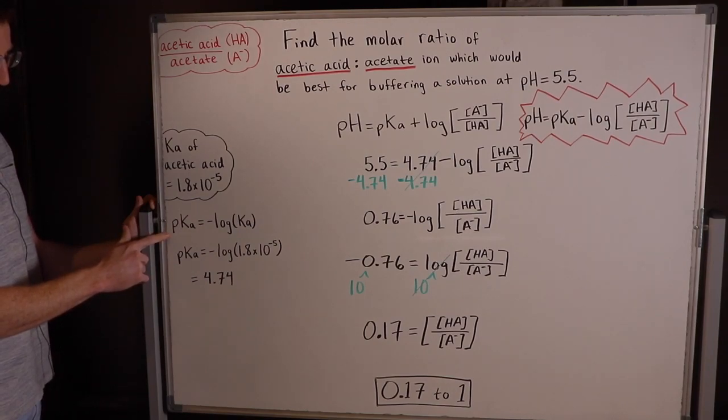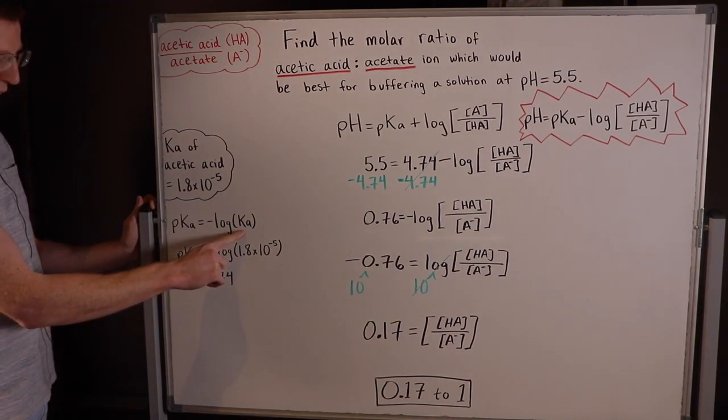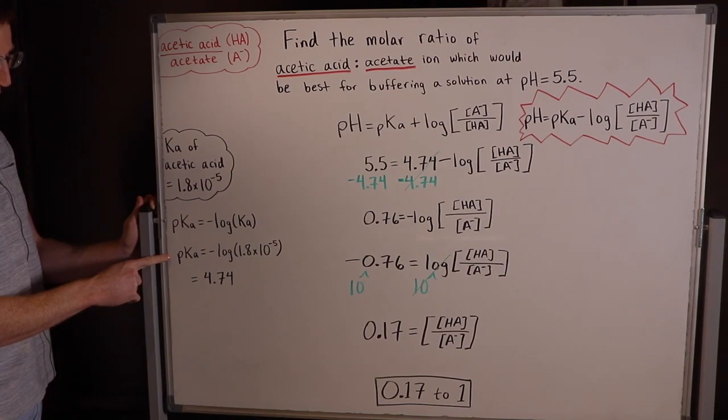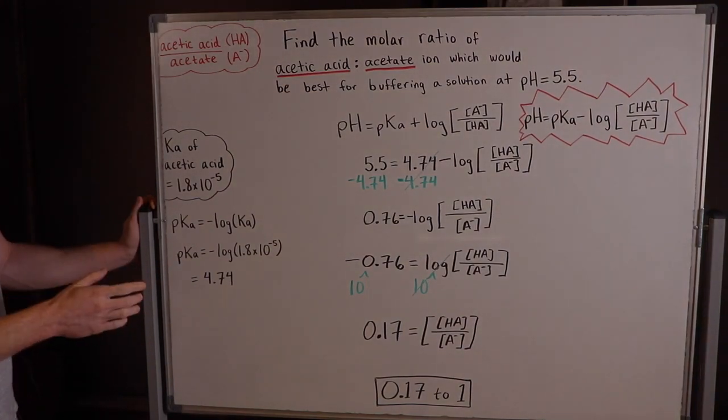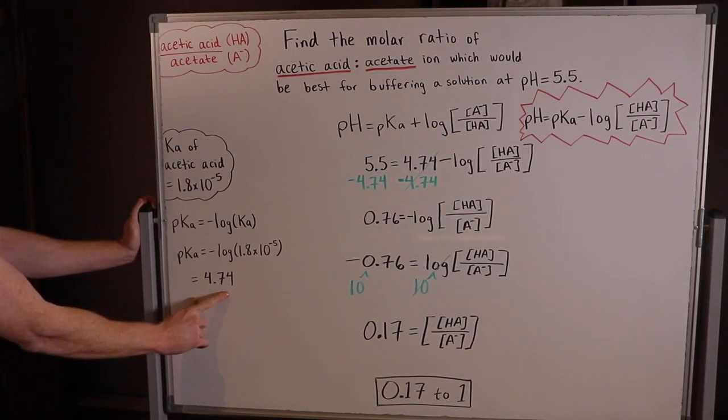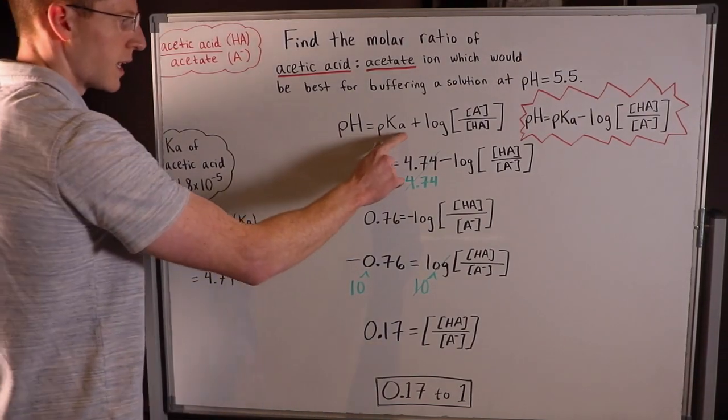And to find the pKa, we know this is just the negative log of the Ka. So when you take the negative log of 1.8 times 10 to the negative 5, you get 4.74 for your pKa.